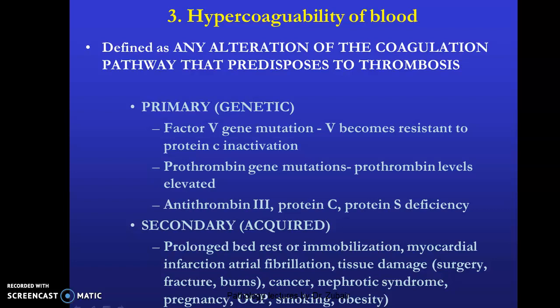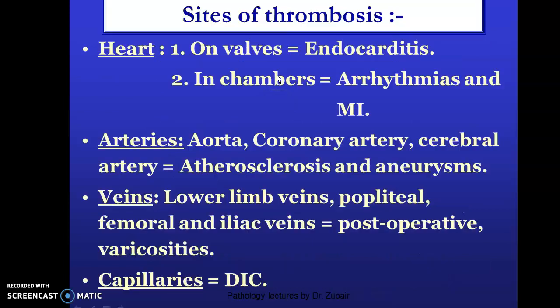Genetic causes of hypercoagulability include Factor V gene mutation, prothrombin gene mutation, and deficiencies of antithrombin, protein C, and protein S. Secondary acquired causes include prolonged bed rest or immobilization, myocardial infarction, atrial fibrillation, tissue damage following surgery, fracture burns, cancer, nephrotic syndrome, oral contraceptive pills, smoking, and obesity.